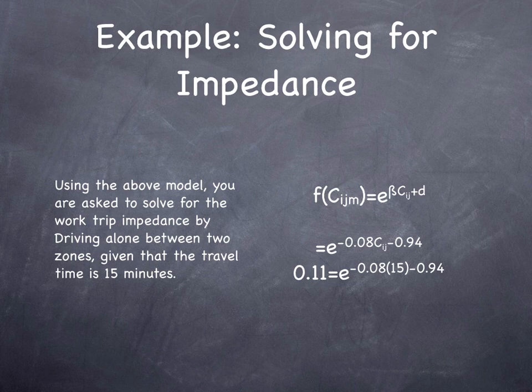In this example, if the impedance is 15 minutes and we've estimated a model which says that our impedance, or f(C_ijm), some function of the cost, which is equal to the monetary plus the time cost of traveling from i to j by mode m, equals, in this case,